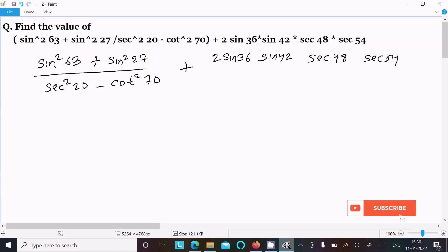I am going to find the value of sin square 63 plus sin square 27 divided by sec square 20 minus cot square 70 plus 2 sin 36 sin 42 sec 48 sec 54. So let's see the answer.